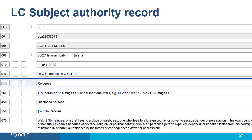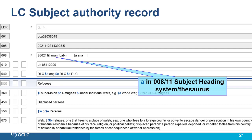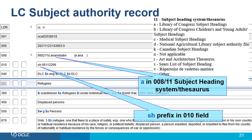Subject headings for LC and other thesauri are also indicated in 008-11 of the authority record. This is the LC subject authority record for Refugees, where 008-11 is coded A for Library of Congress subject heading, and the prefix in the 010 field is SH, indicating this is from the Library of Congress subject headings thesaurus and not children's. Note that sometimes a heading may be exactly the same for LCSH and for LC Children's, as is the case for Refugees, but you'll be able to distinguish these by the 008-11 and the prefix in the 010.